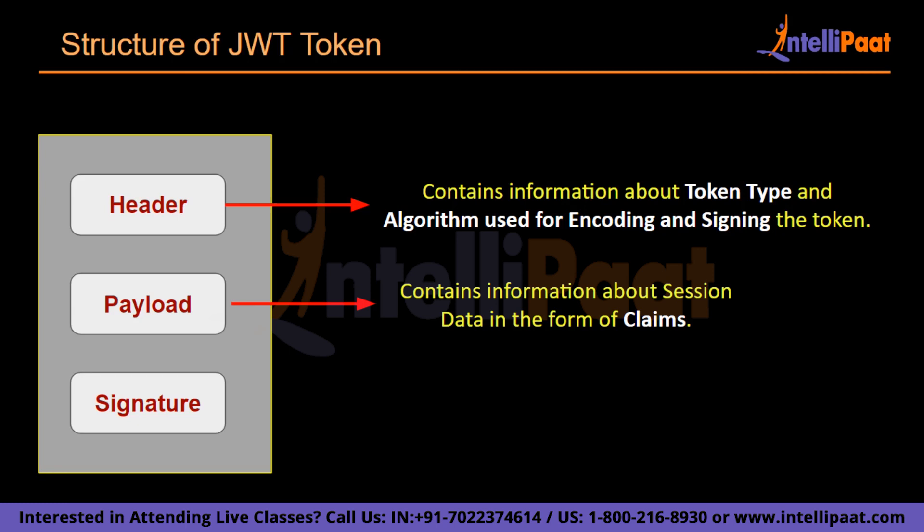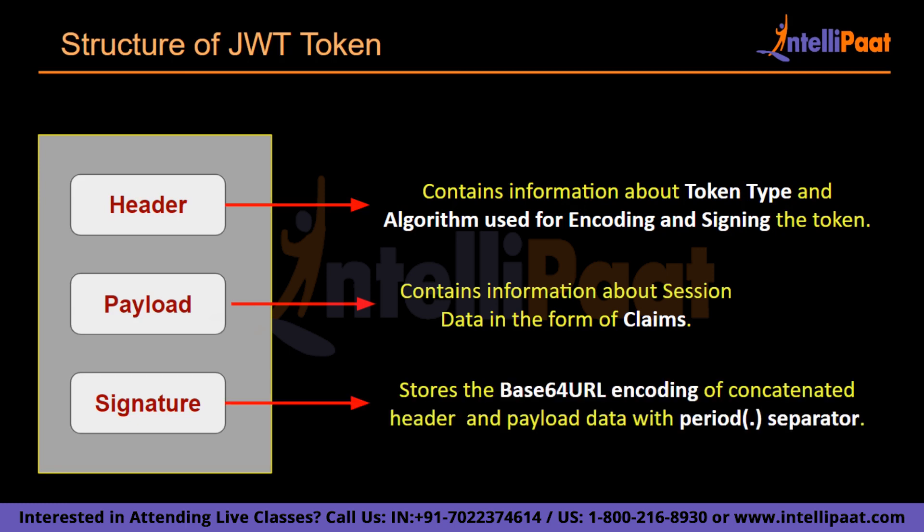Then comes the most important part of this token — the signature. The signature is calculated by encoding the header and payload using Base64 URL encoding, concatenating them with a period separator, and then giving that to the cryptographic algorithm. When the header or payload changes, the signature has to be recalculated. Only the identity provider (IDP) knows the private key to calculate the signature, which completely prevents tampering of the token.